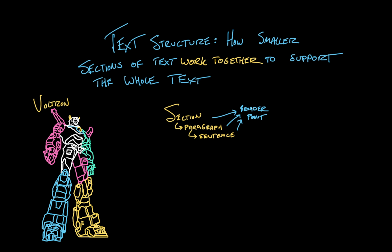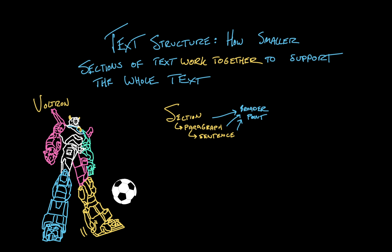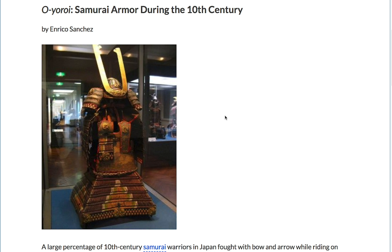When we look at Voltron's foot in motion, we analyze what the foot is doing in the service of Voltron as a whole. If Voltron's foot kicks a ball, we have to zoom out to ask: is Voltron playing soccer? This is a pretty abstract idea without any text examples, so let's stop talking about space robots and start talking about the armor of 10th century Japanese horse archers.